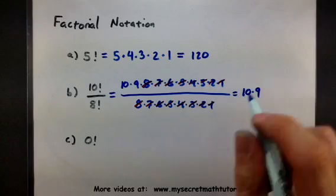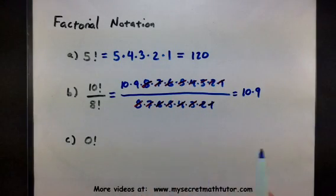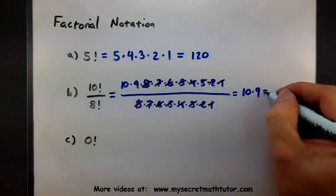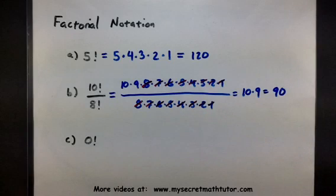This is how I can find my answer. So the only thing I'm going to multiply is just 10 times 9 and get 90. Perfect.